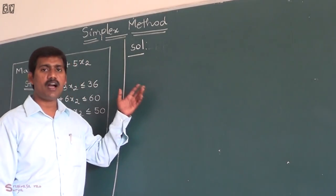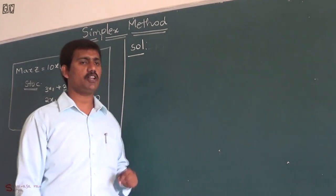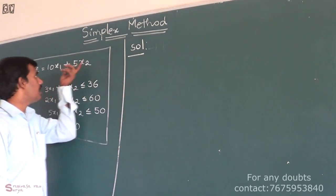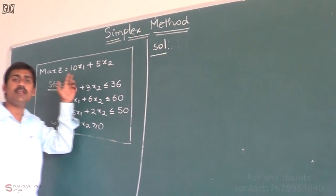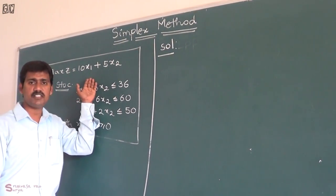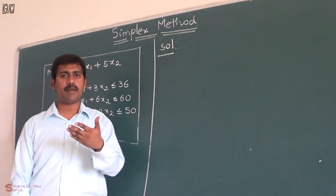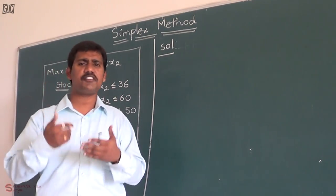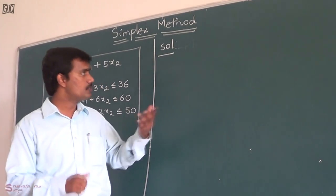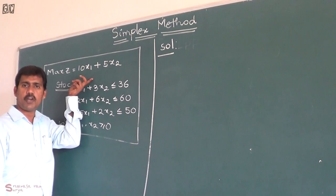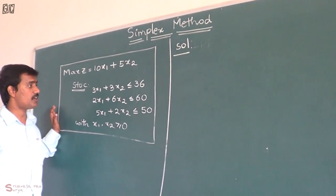We are going to solve this problem using the simplex method. First, we have to check if the objective function is in the form of maximization or minimization. It is a maximization, so we move on to the next step. If it is minimization, convert it to maximization, because every company is looking to maximize profit.